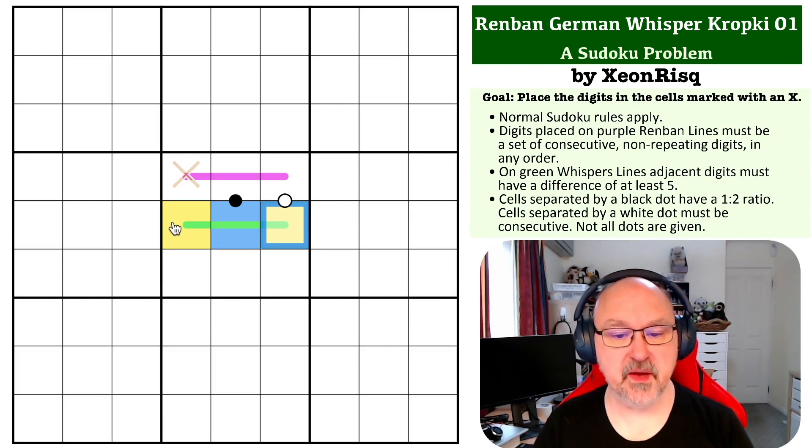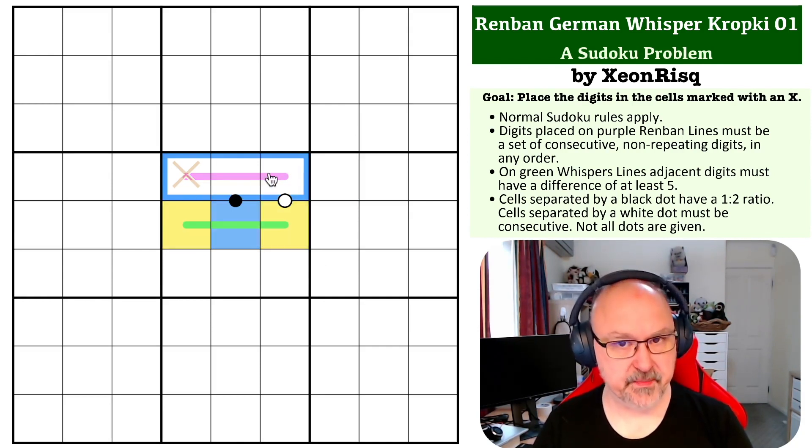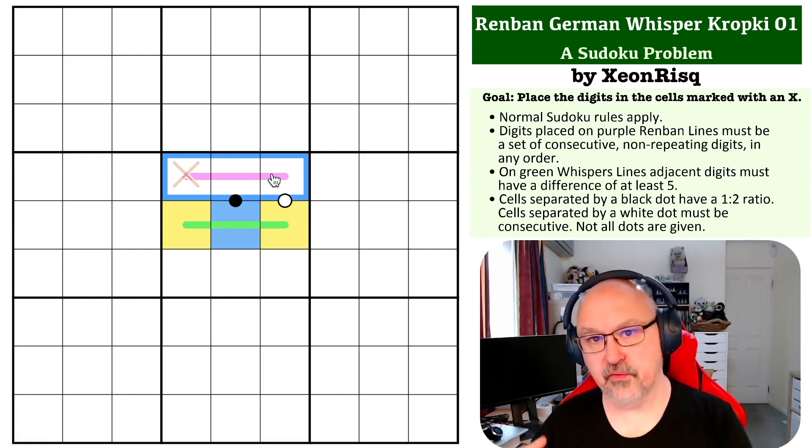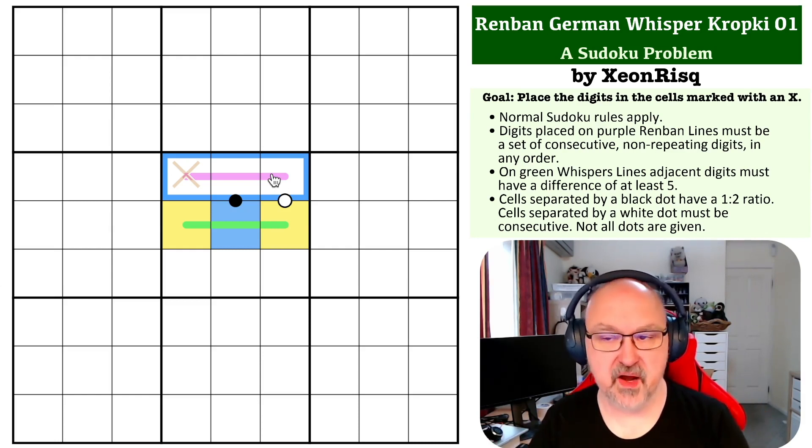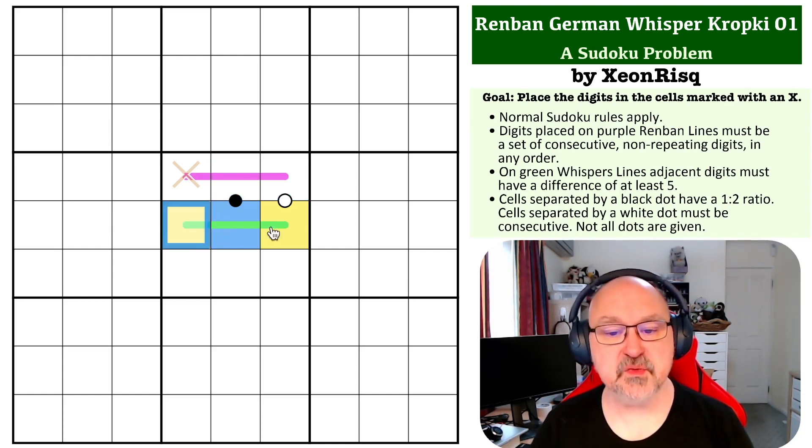So now what we want to think about, because we know the five can't be on the whisper line, is does the five have to be on the Renban line? Now, if the five isn't on the Renban line, then this will all have to be from the same polarity, because without the five on the line it will all be from either one to four or from six to nine, because you're making a run of consecutive digits. Without the five, it must either be all below five or all above five, because that's the only way of doing it without including the five.